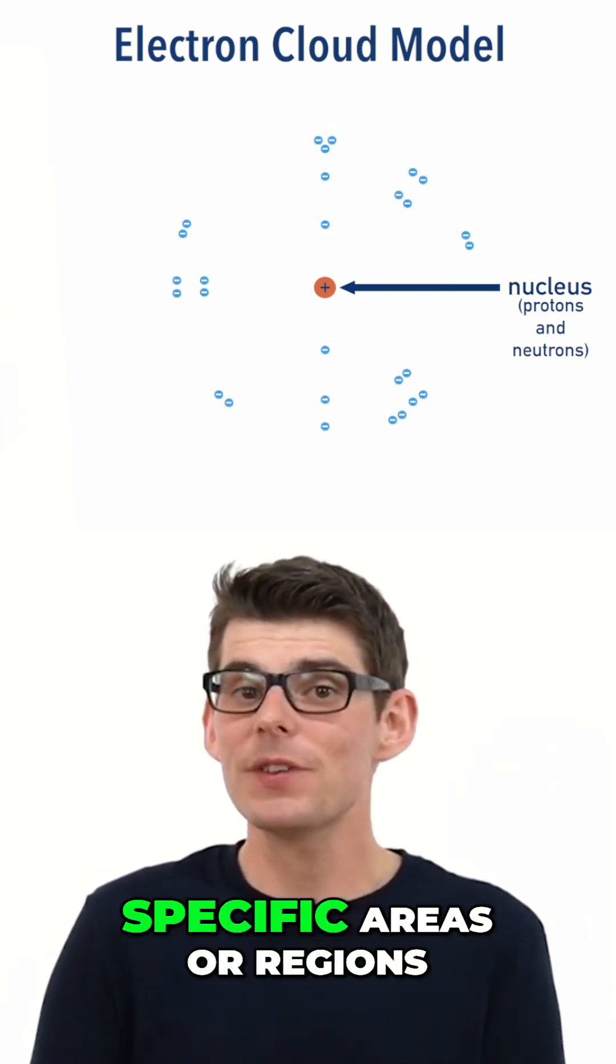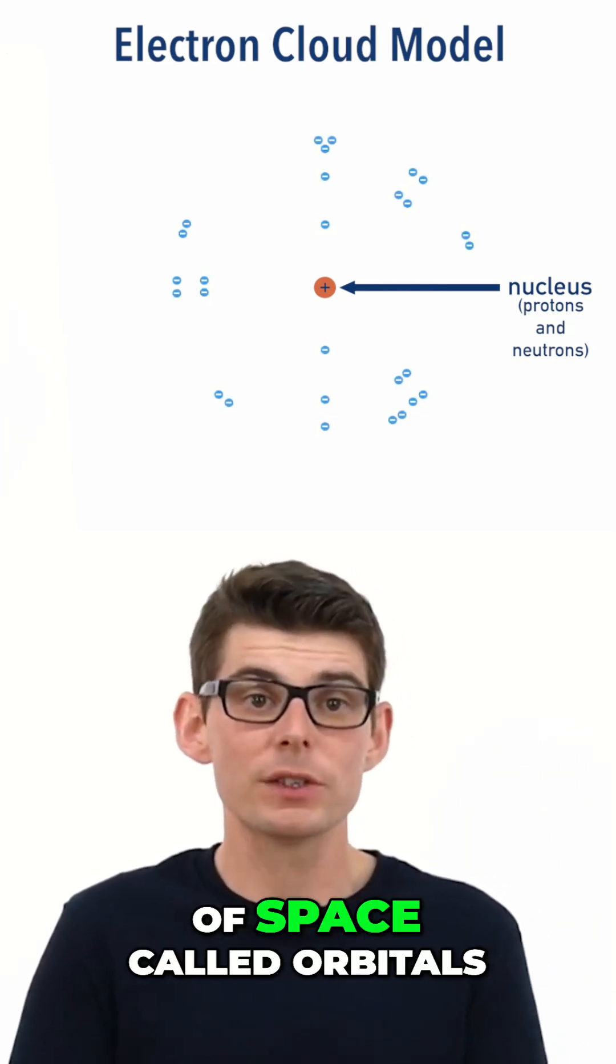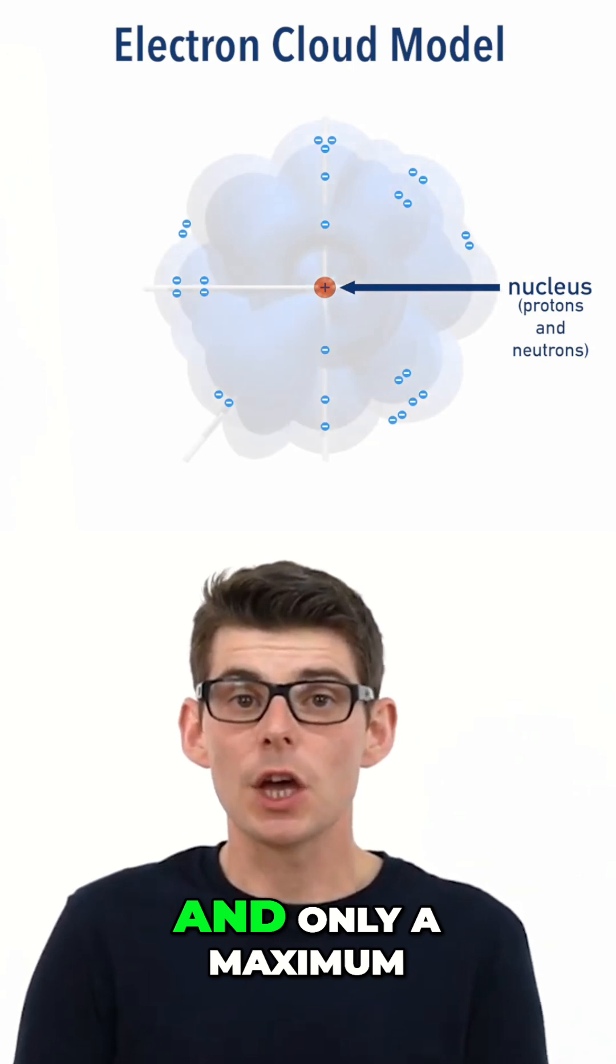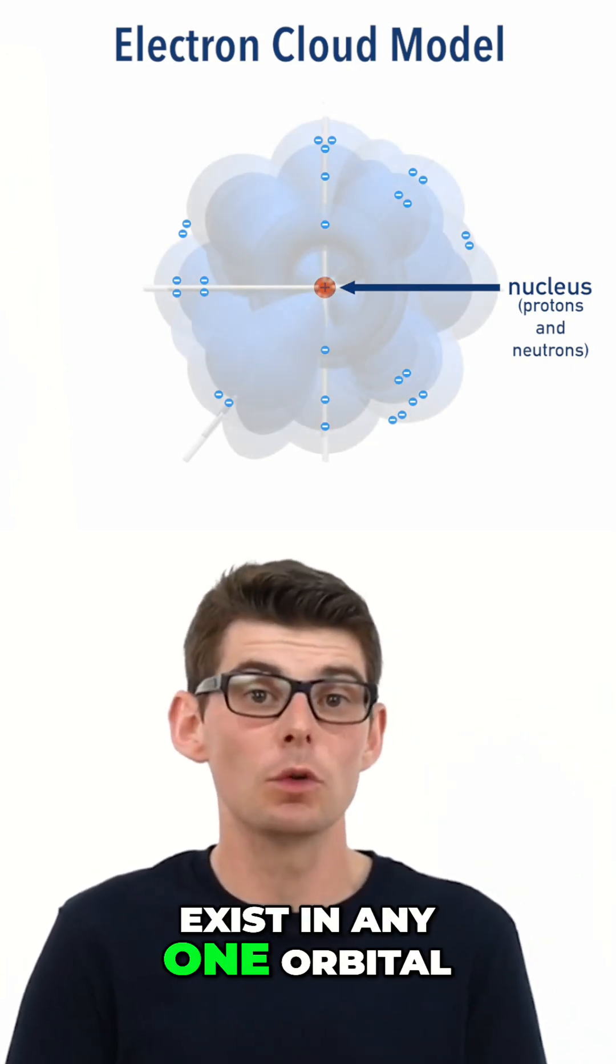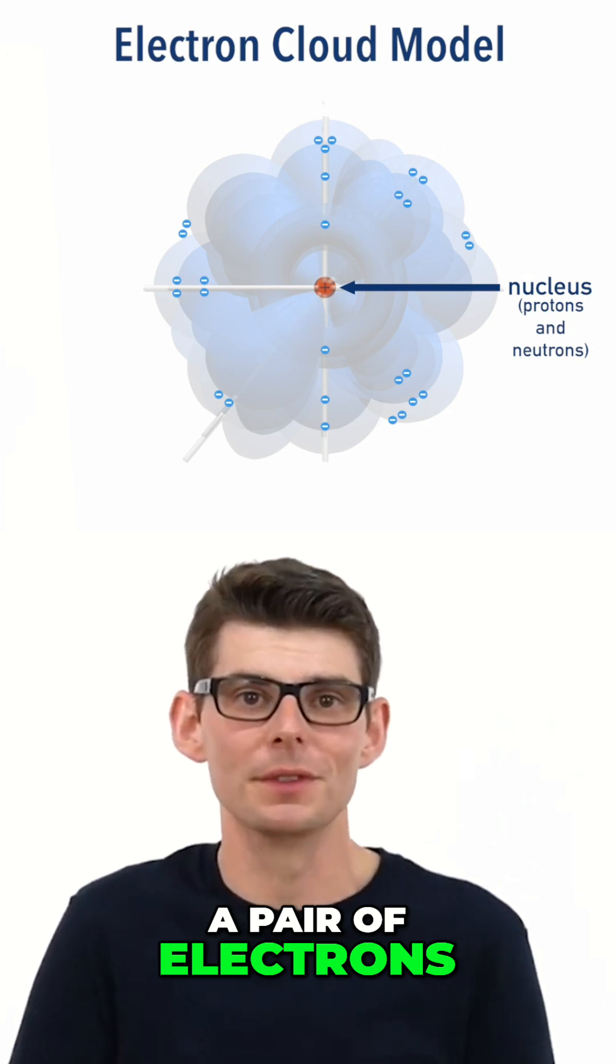The electrons exist in specific areas or regions of space called orbitals, and only a maximum of two electrons can exist in any one orbital – a pair of electrons.